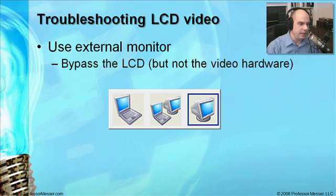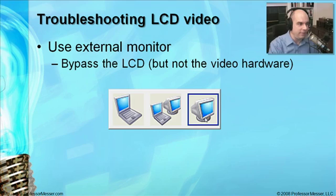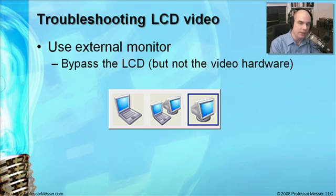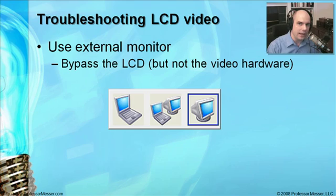When working with the function key and an external monitor, you may be able to redirect output directly to the external monitor using software or the FN key combination. If you're not getting anything on the screen, plug in an external monitor even if you don't normally use one, and tell your laptop to send the video signal that way. This lets you determine whether the video card is working, or whether the problem is isolated to the built-in LCD.